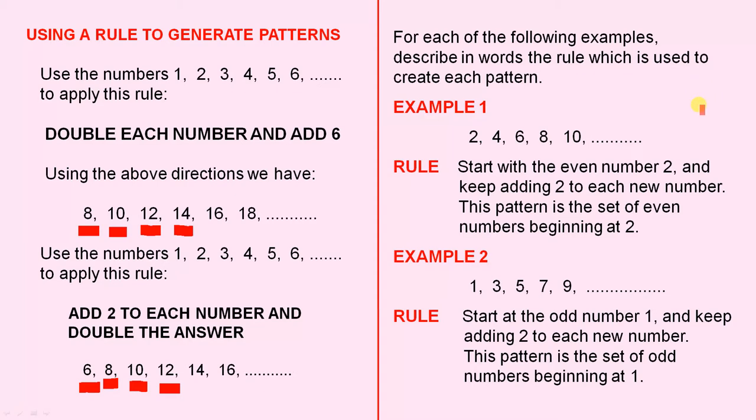For each of the following examples, describe in words the rule which is used to create each pattern. So the first example is 2, 4, 6, 8, 10. It's quite easy to see that if you start with the even number 2 and keep adding 2 to each new number, this pattern is the set of even numbers beginning at 2.